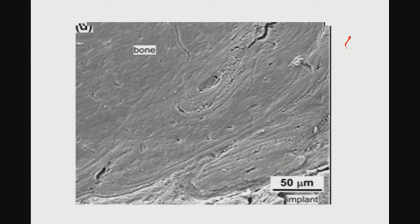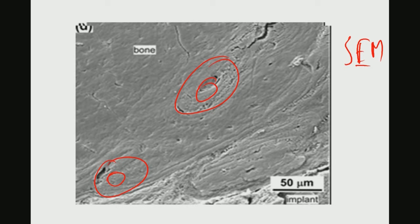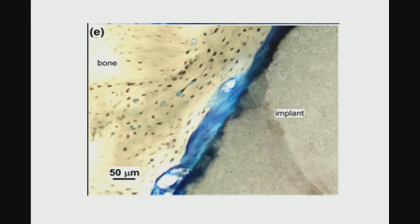This is a scanning electron microscope image showing osteons in the host bone structure, and your material is on this side. These additional histology images show the characteristic cellular morphology in the host bone around the implant.